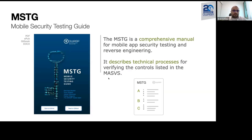The MSTG, on the other hand, is a much more comprehensive manual for mobile app security testing and even reverse engineering. For all the different requirements outlined in the MASVS, there are different test cases — always one requirement in the MASVS will have one test case for iOS and one for Android. These describe in great detail the technical processes a penetration tester would need to follow to verify the requirement, and also outline best practices for developers to mitigate vulnerabilities.